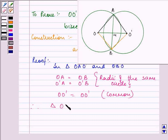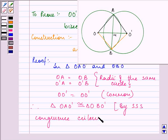So therefore, triangle OAO' is congruent to triangle OBO' by SSS congruency criterion.